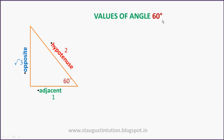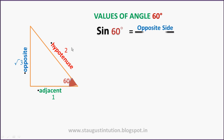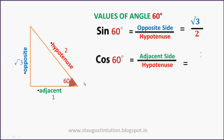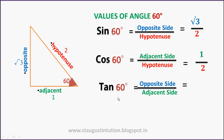Now values of 60 degrees. For the 60 degree angle, the opposite side is root 3 and the adjacent side is 1. Sin 60 is opposite by hypotenuse, that is root 3 by 2. Cos 60 is adjacent by hypotenuse, that is 1 by 2. Tan 60 is opposite side by adjacent side, that is root 3 by 1.